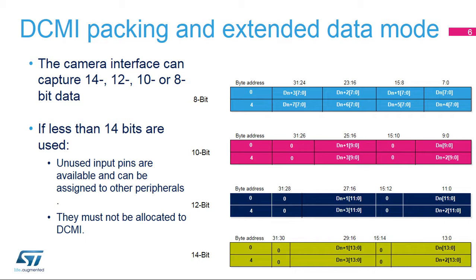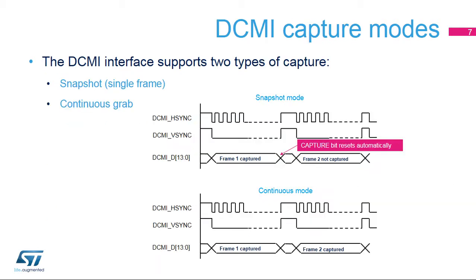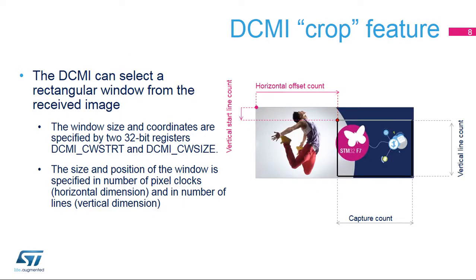An 8-level FIFO is used in order to accommodate for any DMA response latency without losing data. The camera interface allows you to capture a single frame synchronized after a software request, or to continuously receive the data flow. In capture mode, the capture is requested by setting the capture bit in software, and starts with the beginning of the next incoming frame. The DCMI clears the capture bit when the single frame has been received.